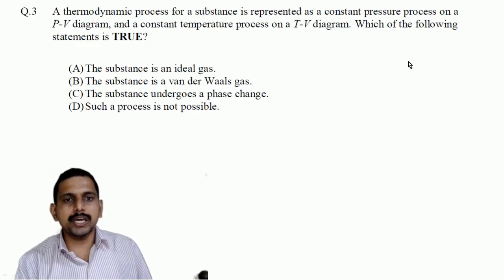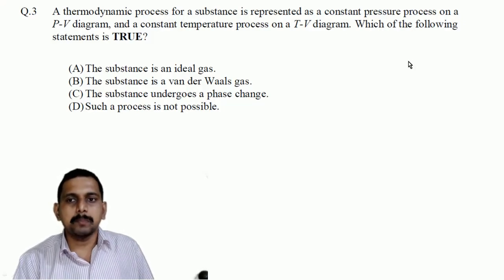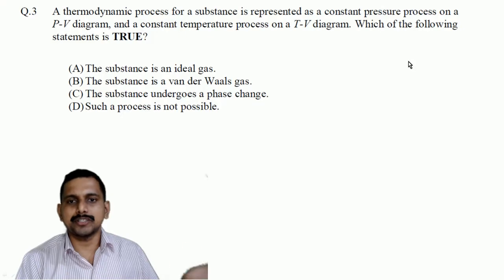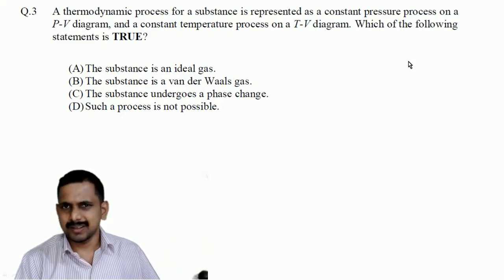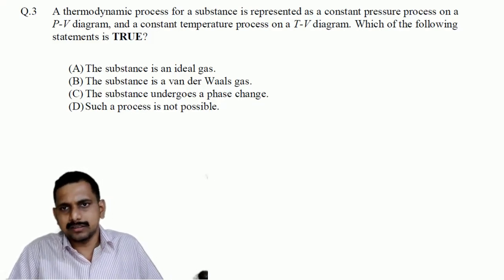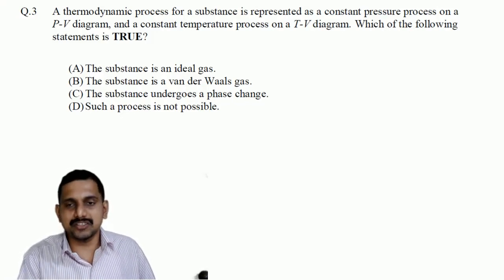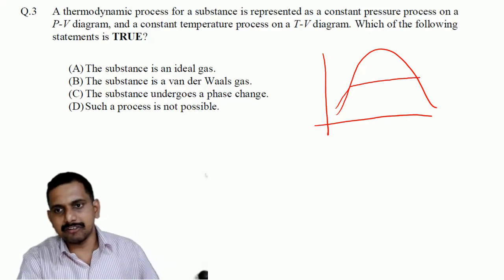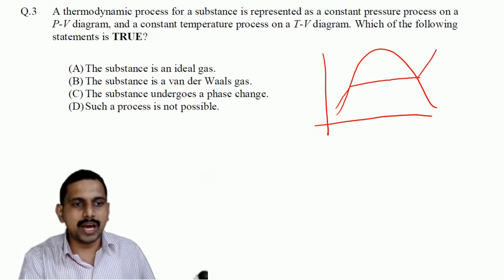Next question: a thermodynamic process is represented as a constant pressure process on a PV diagram and a constant temperature process on a TV diagram. Which statement is true? The substance undergoes phase change — this is the correct answer. When phase change happens, both pressure and temperature remain constant. So the answer is C.